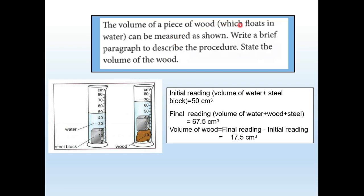The volume of a piece of wood which floats in water can be measured as shown. Write a brief paragraph to describe the procedure. The initial reading is 50 cm³, which is the volume of water plus the steel block. The final reading is the volume of water plus wood plus steel, which is 67.5 cm³. So the volume of wood is 67.5 minus 50, giving 17.5 centimeter cube.